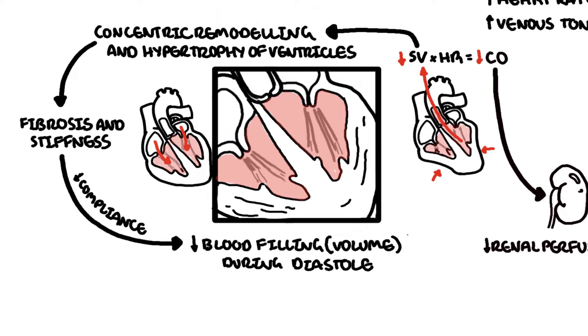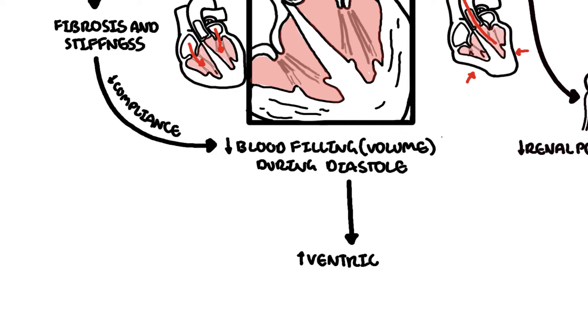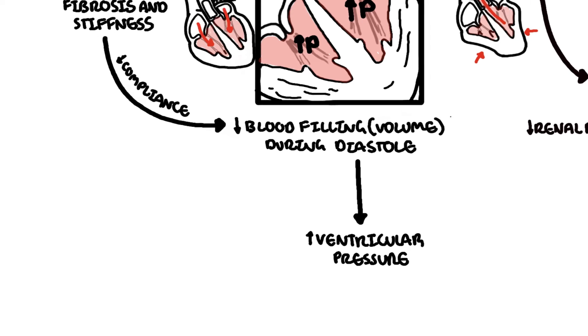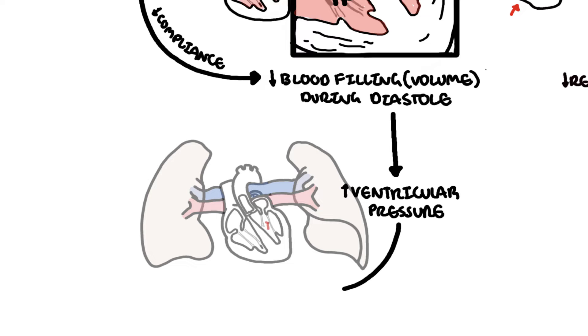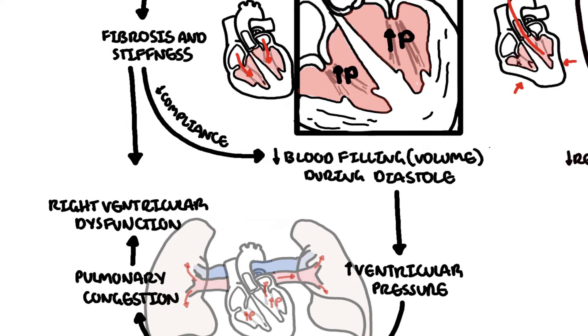The reduced ventricular compliance as a result of ventricular stiffness causes an increase in ventricular pressure, which then will cause an increase in arterial pressure and this can lead to pulmonary congestion. Majority of patients with heart failure with preserved ejection fraction suffer from pulmonary hypertension, and as a result, can develop right ventricular dysfunction, right-sided heart failure. Of course, we cannot forget there is also left-sided dysfunction as a result of the ventricular remodeling process as well.